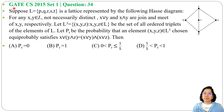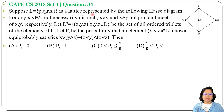Let's solve a previous question on lattice. This question was asked in GATE CH 2015, Set 1, Question Number 34. Suppose L = {p, q, r, s, t} is a lattice represented by the following Hasse diagram.